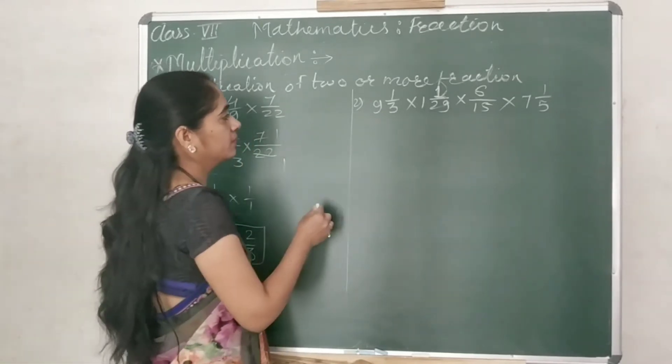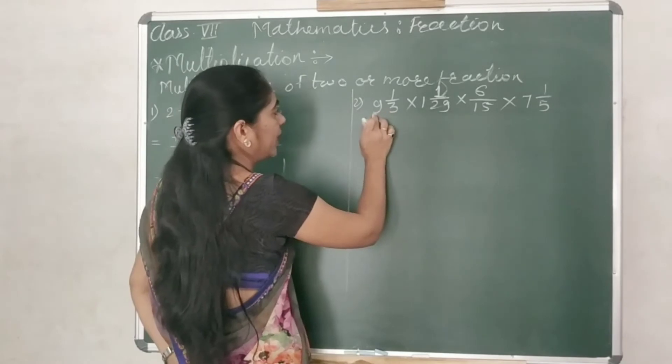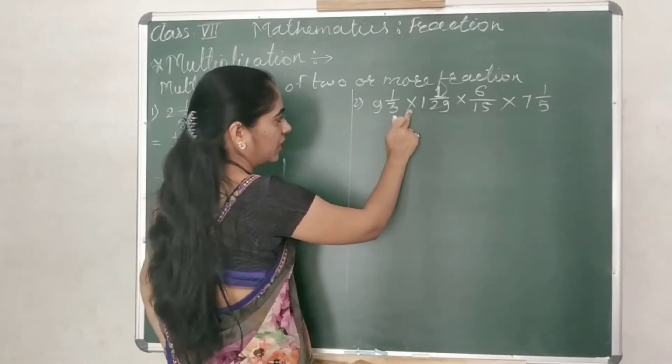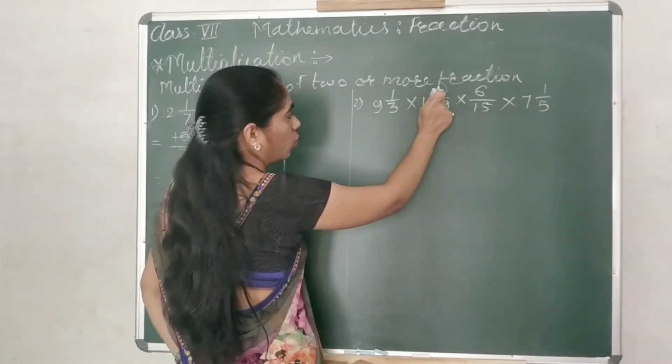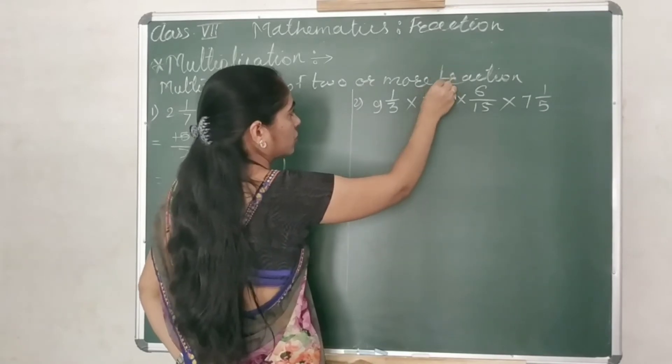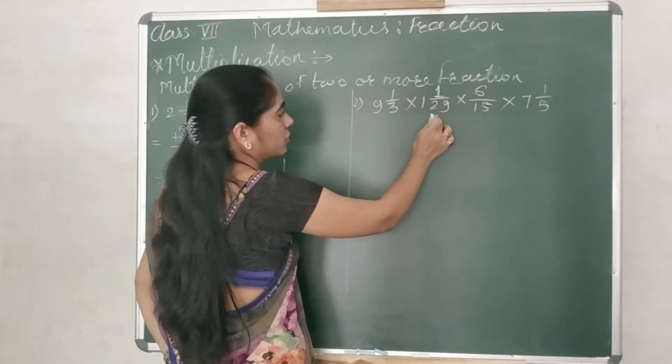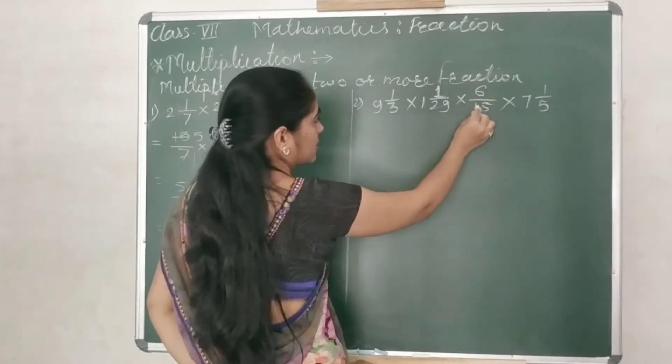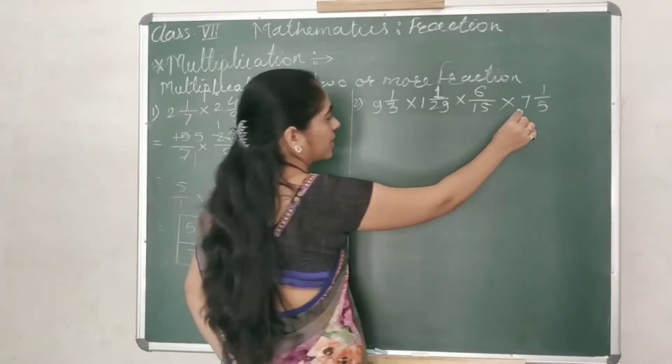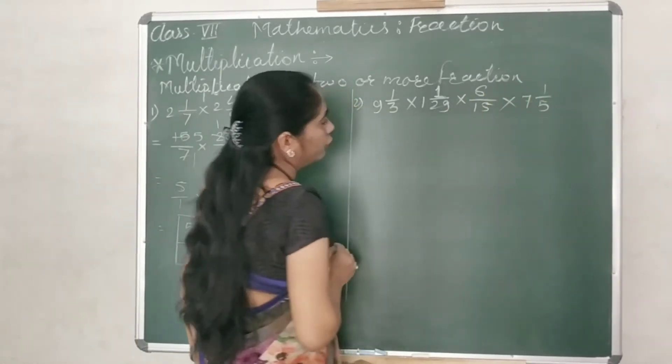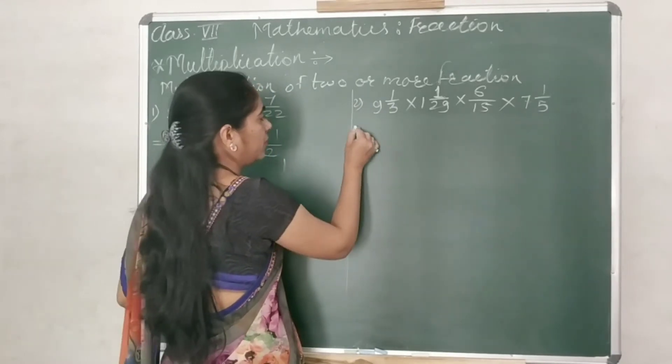Let's solve another one. See, 9 integer 1 upon 3 multiplied by 1 integer 1 upon 29 multiplied by 6 upon 15 multiplied by 7 integer 1 upon 5. So let's convert it first in proper time.